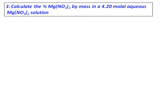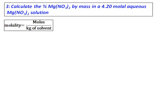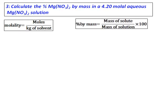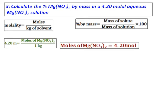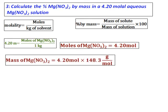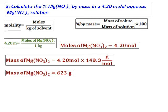Calculate the percent magnesium nitrate by mass in a 4.20 molal aqueous magnesium nitrate solution. Molality is given, so molality equals moles over kilogram of solvent. Percent by mass equals mass of solute divided by mass of solution times 100. From the molality formula, I can get the moles of magnesium nitrate, which equals 4.20 mol. Using the molar mass of magnesium nitrate, I can get the mass of magnesium nitrate, which equals 623 grams.